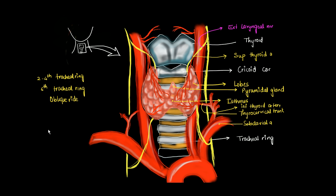When a gland has to be resected, we must ensure that while ligating the superior thyroid artery, the external laryngeal nerve is not damaged. The relation is like a V shape — the nerve and artery come close away from the gland. Therefore, ligation of the superior thyroid artery must be done very close to the gland to prevent damage to the external laryngeal nerve.